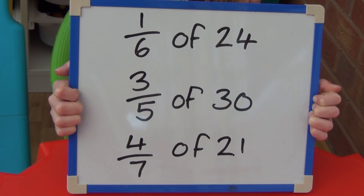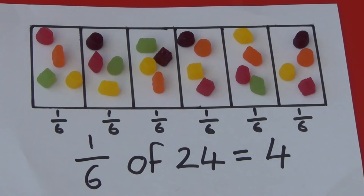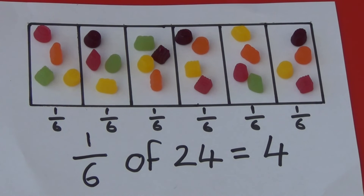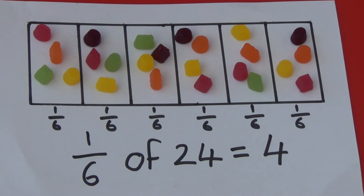I am going to give you the answers in three, two, one. For one-sixth of twenty-four, the denominator is six which tells me I need to divide my bar into six sections and share my twenty-four sweets out between the six sections. The numerator is one, so that means I need to find out how many sweets there are in one section. Each section has four sweets, which tells me one-sixth of twenty-four is four.